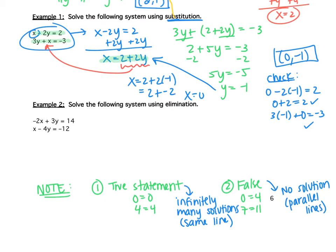Now let's return to Example 2 — solving the system using elimination. We either need to eliminate those x's or those y's. We need the same number in front but with opposite signs. You can choose whether to eliminate x or y. I would like you to complete this example — pause the video and try it, then come back when you're finished. The answer is negative 4 comma 2. When you turn these notes in, I expect this problem to be done.